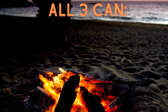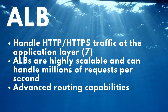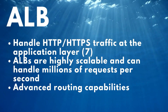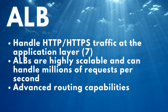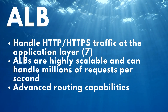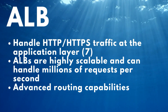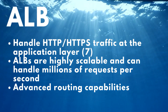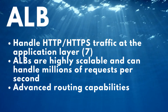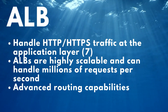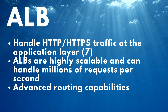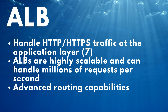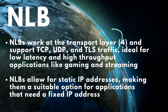Now let's take a closer look at each of the load balancers and their differences. The first one is the Application Load Balancer, or ALB. This load balancer is specifically designed to handle HTTP and HTTPS traffic at the application layer. ALBs are highly scalable and can handle millions of requests per second. They also provide advanced routing capabilities, such as routing based on the content of the request, which makes them a great choice for applications that require complex routing rules.